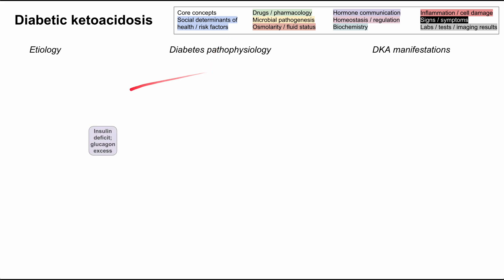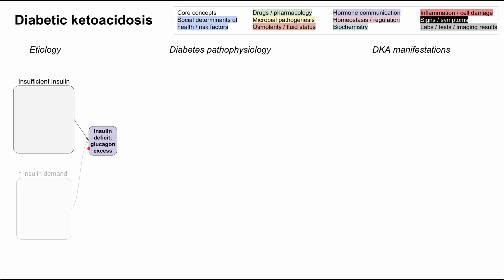The central mechanism of diabetic ketoacidosis is that insulin is low, and you have, relative to insulin, an excess of glucagon. We'll next talk about the etiologies.